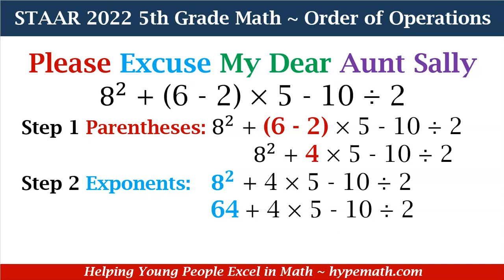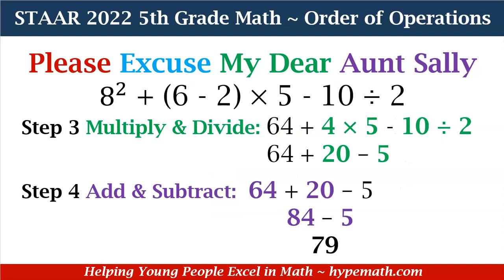Now we're going to address our multiplication and division. Remember, it's in order from left to right. So from left to right, we have 4 times 5, which equals 20. And then 10 divided by 2, which equals 5. So now our expression is 64 + 20 − 5.